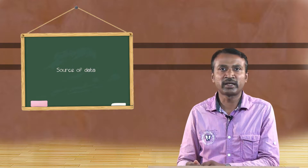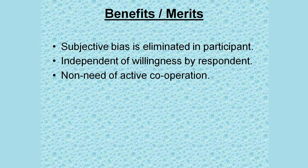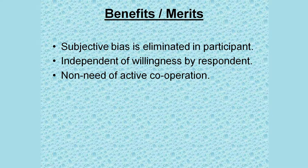The first method is the observational method of data collection. Observation is a scientific and systematic method of collection of data. The main merits are: subjective bias is eliminated in participants, there is no individual bias in the observational method. It is independent of the willingness of the respondent — the person voluntarily participates in the research — and there is no need for active cooperation from the client.